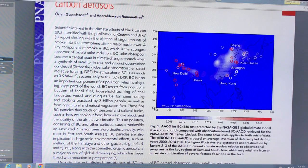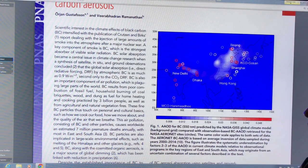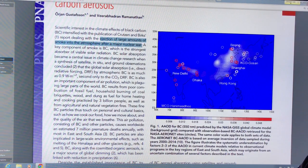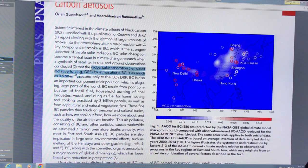There was a lot of modeling done during the Cold War on the idea of a nuclear exchange - how it would bring aerosols up into the atmosphere, block the sunlight, and cause a nuclear winter. Black carbon is the strongest absorber of visible solar radiation. It became a central issue in climate change research when satellite data and ground observations concluded that the global solar absorption direct radiative forcing by atmospheric black carbon is as much as 0.9 watts per square meter, second only to CO2.